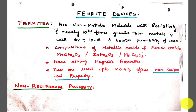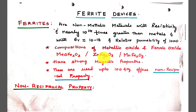Ferrites are purely dielectric materials having high characteristics. Basically, ferrites are constructed by the composition of metallic oxide plus ferric oxide. The compositions include zinc ferric oxide, magnesium ferric oxide, and manganese ferric oxide. All these ferrites have strong magnetic properties.